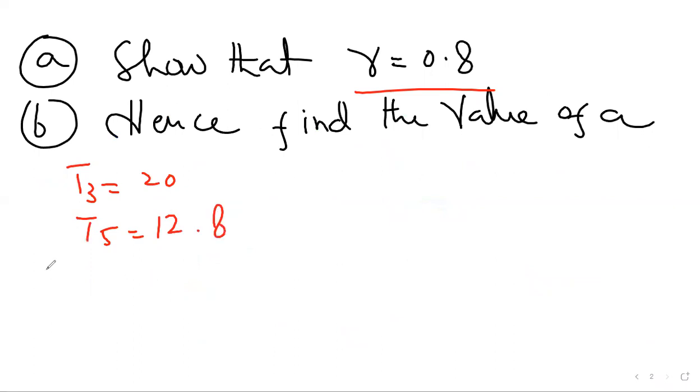As we know very well, the GP progression is A, AR, AR square, AR cube, AR to the 4th, and so on. And the last term is noted by AR to the n minus 1.